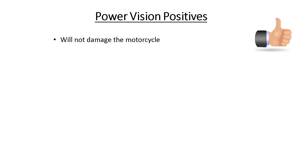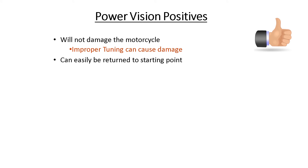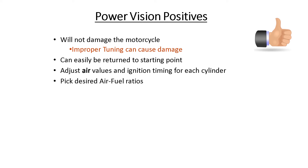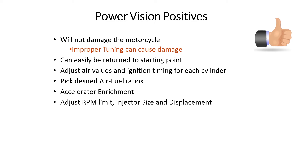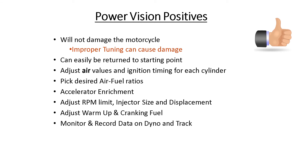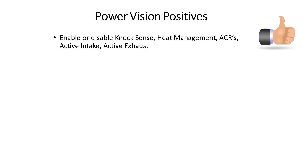Power Vision positives: it will not damage the motorcycle — though if you don't tune it properly it could. It can easily be returned to a starting point or back to where you originally pulled out of the ECM when you married the Power Vision to it. It can adjust air values and ignition timing for each cylinder independently, pick desired air-fuel ratios for the tune, control the accelerator enrichment, adjust the RPM limit, injector size, and cubic inch displacement, adjust warm-up and cranking fuel, monitor and record data on a dyno and on track or private road course, and read and clear codes from the ECM. It can also enable knock sense, engine temperature management, heat ACRs, active intake, and active exhaust.